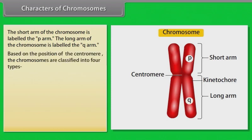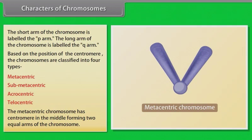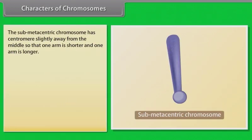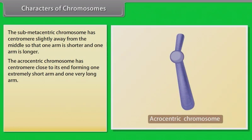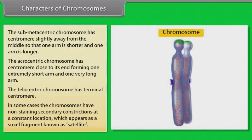The short arm of the chromosome is labeled the P-arm and the long arm is labeled the Q-arm. Based on the position of the centromere, chromosomes are classified into four types: metacentric, submetacentric, acrocentric, and telocentric. The metacentric chromosome has the centromere in the middle forming two equal arms. The submetacentric chromosome has the centromere slightly away from the middle, so one arm is shorter and one is longer. The acrocentric chromosome has the centromere close to its end, forming one extremely short arm and one very long arm. The telocentric chromosome has a terminal centromere. In some cases, chromosomes have non-staining secondary constrictions at constant locations, which appear as a small fragment known as a satellite.